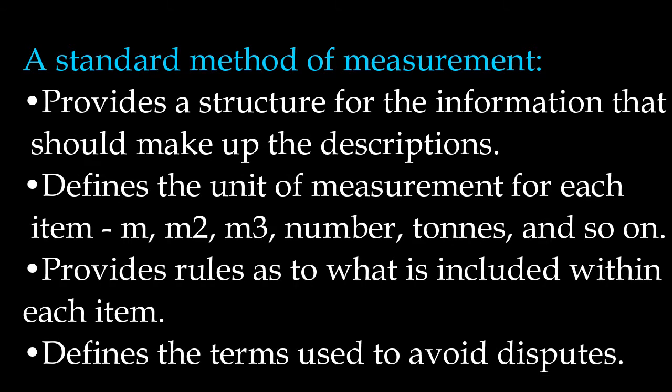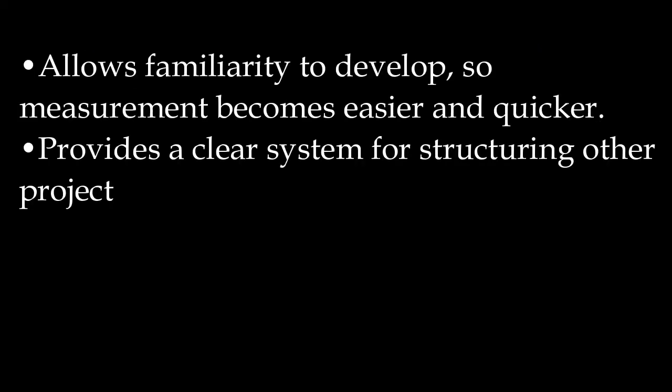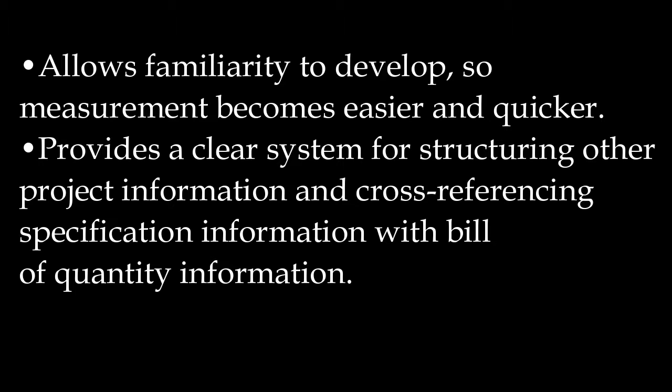A standard method of measurement provides a structure for the information that should make up the descriptions. It defines the unit of measurement for each item — m, metre squared, metre cubed, number, tons, and so on. It provides rules as to what is included within each item. It defines the terms used to avoid disputes. It allows familiarity to develop, so measurement becomes easier and quicker. It provides a clear system for structuring other project information and cross-referencing specification information with bill of quantity information.